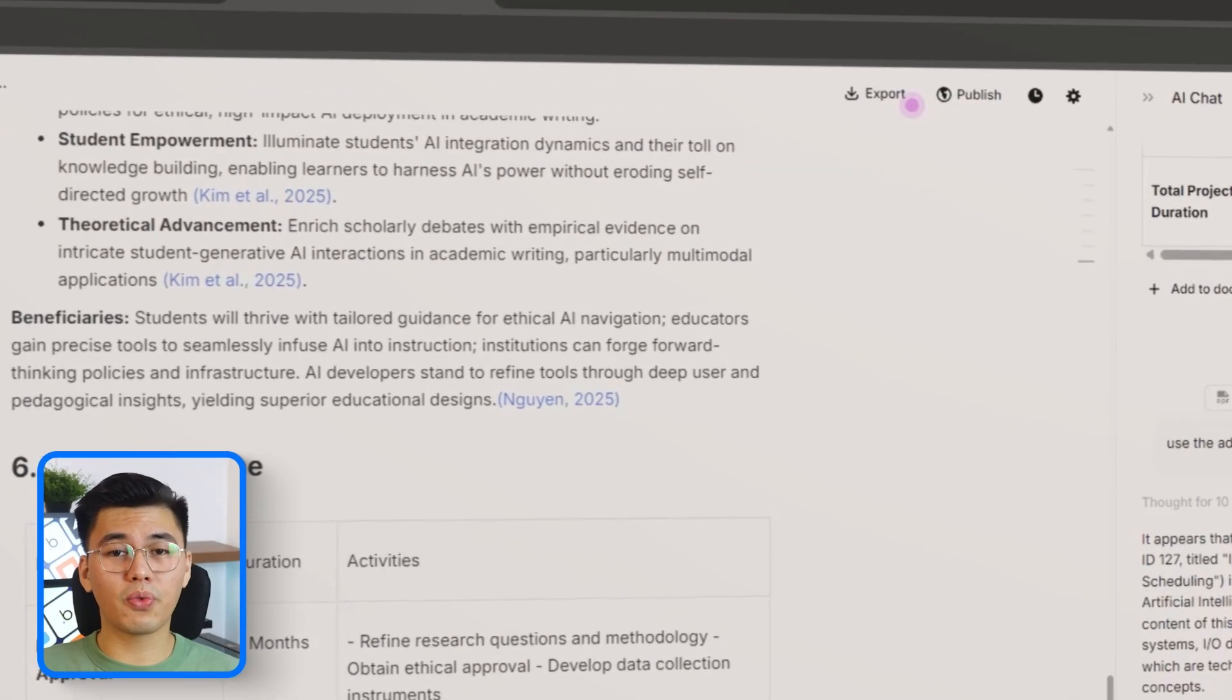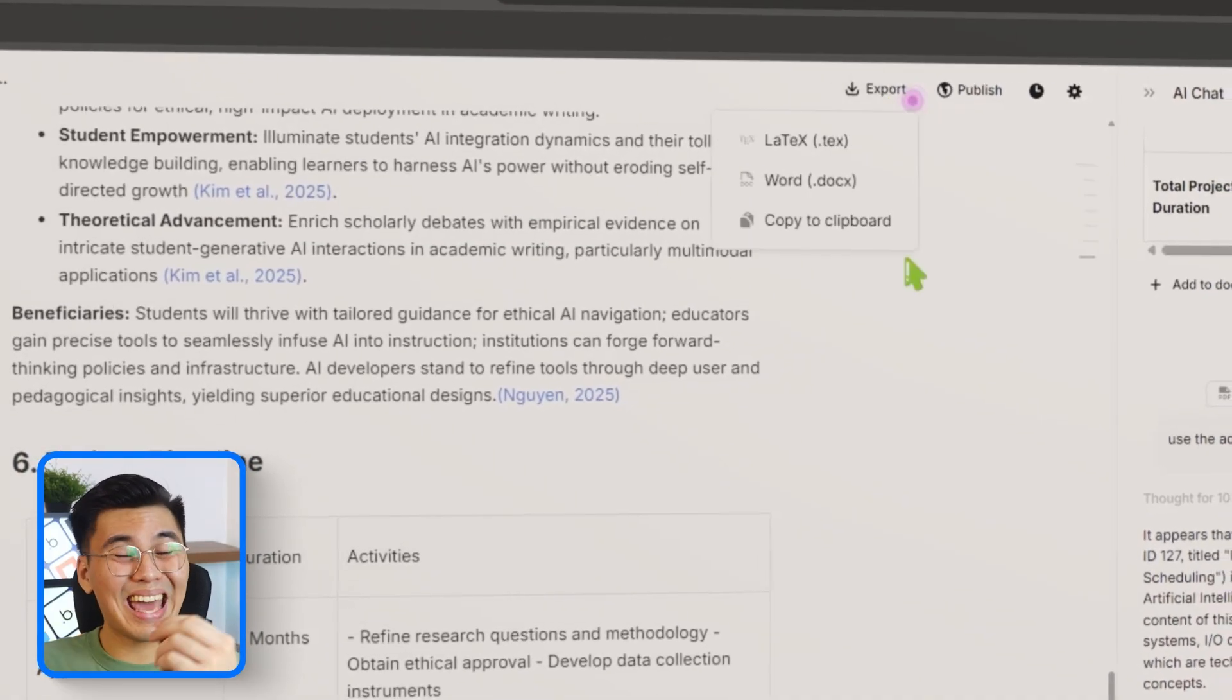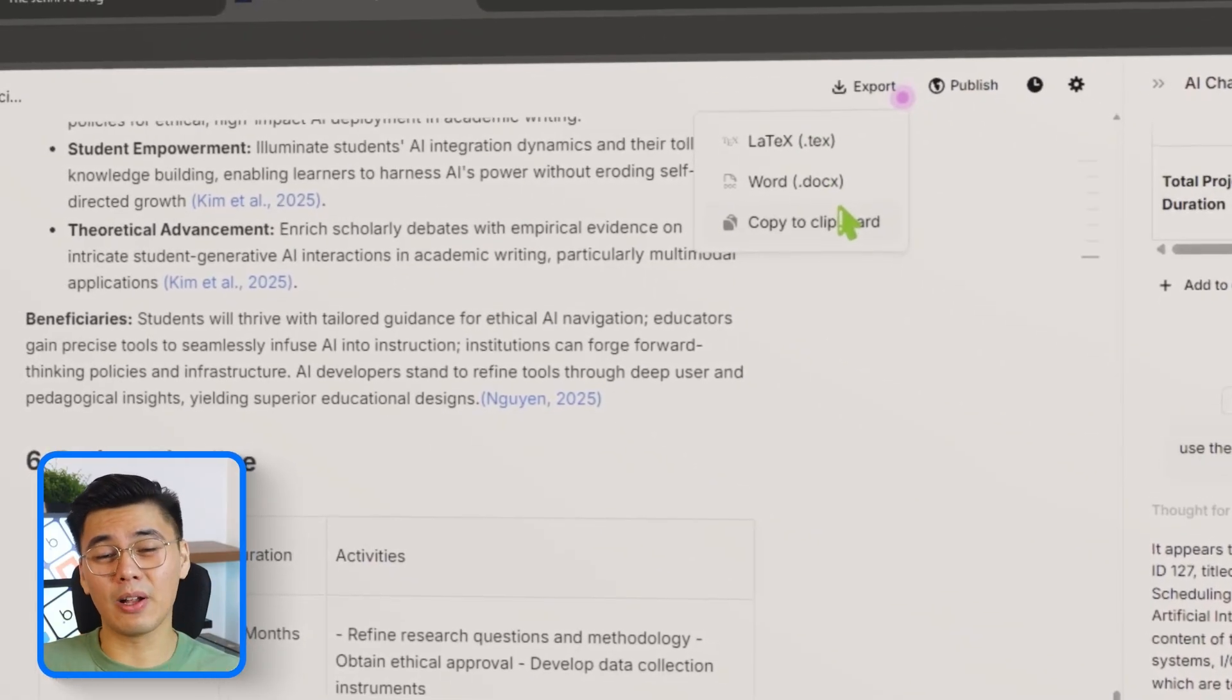Once the entire proposal is refined and everything looks the way we want, we'll move on to exporting the final document. Jenny gives us a few professional formats right out of the box. So in this part of the walkthrough, we'll open the export menu and look at the available options.